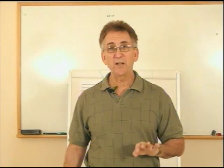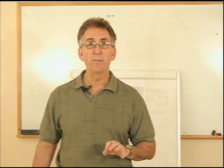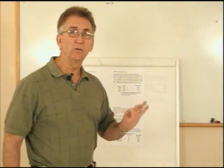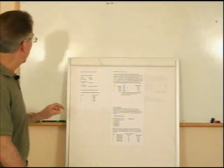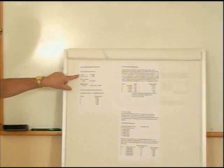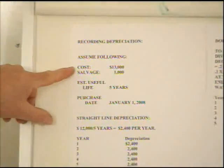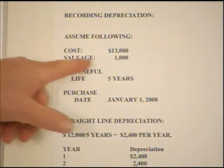There are a number of different methods, and each method I will explain why we use that particular one. The first method we're going to use today is straight line, which means we'll expense out the same amount of the asset year after year. To expense out an asset, I'm going to use the following assumptions — there are some things we always need.